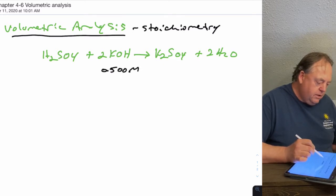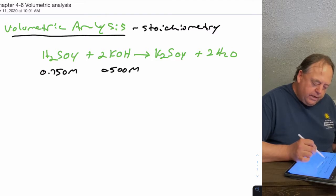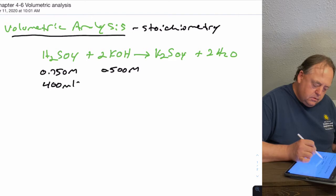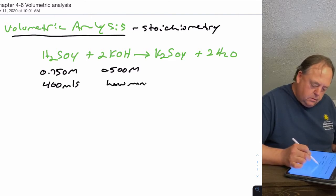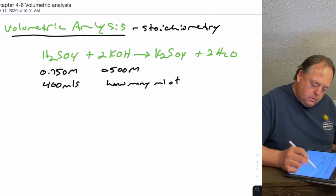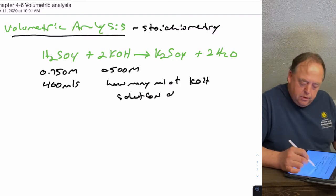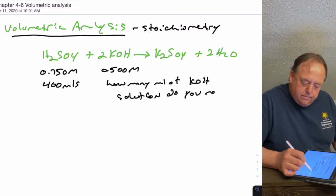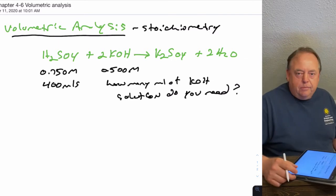Let's see, if I tell you that you have 0.500 molar KOH and you have 0.750 molar H2SO4 and 400 mils of it, then how many mils of the KOH solution do you need?